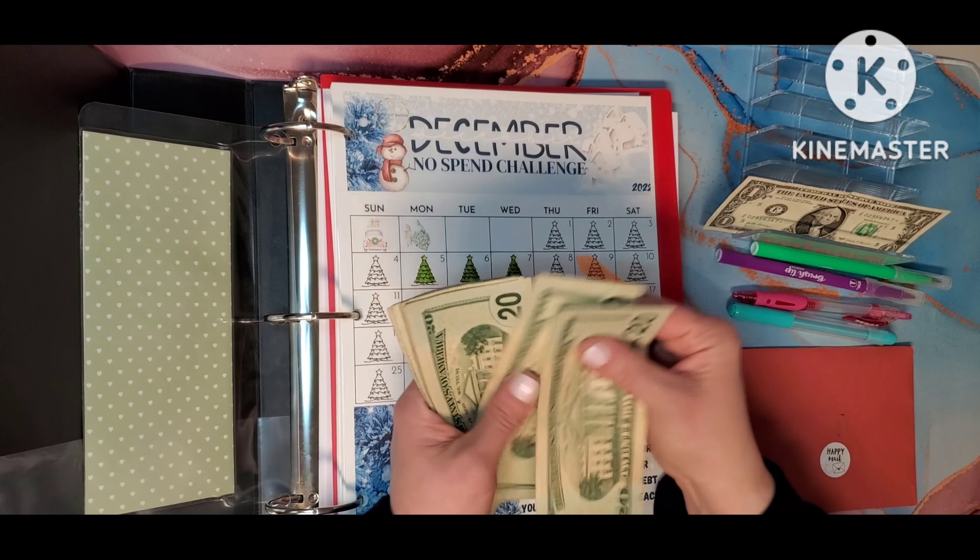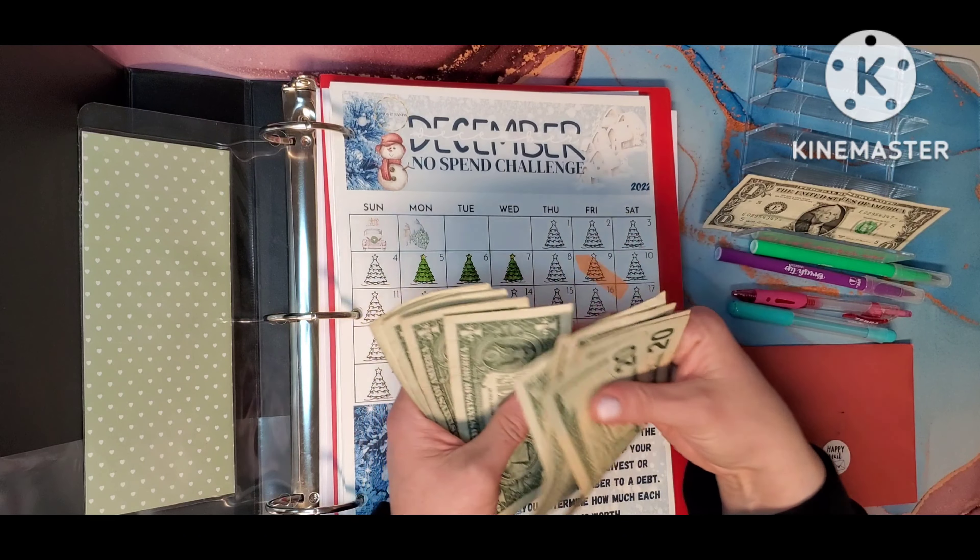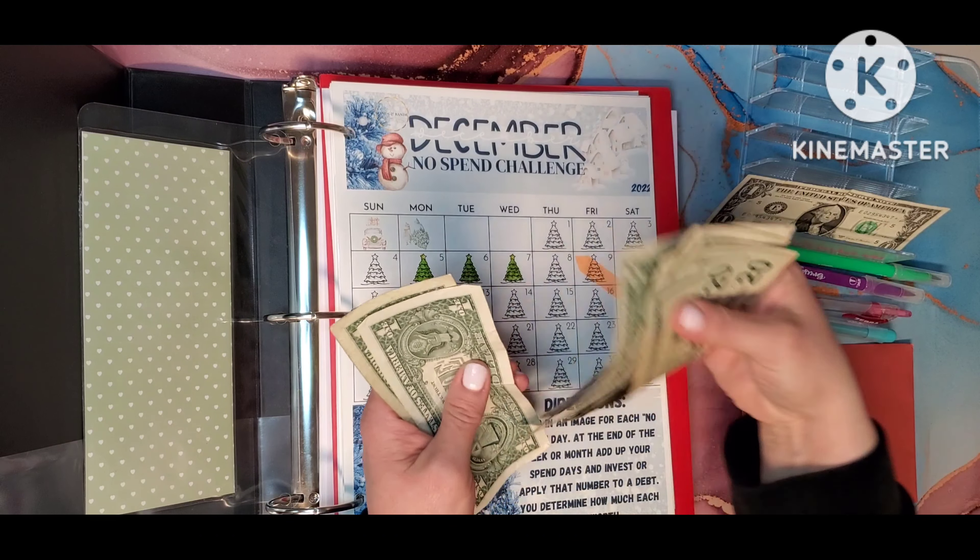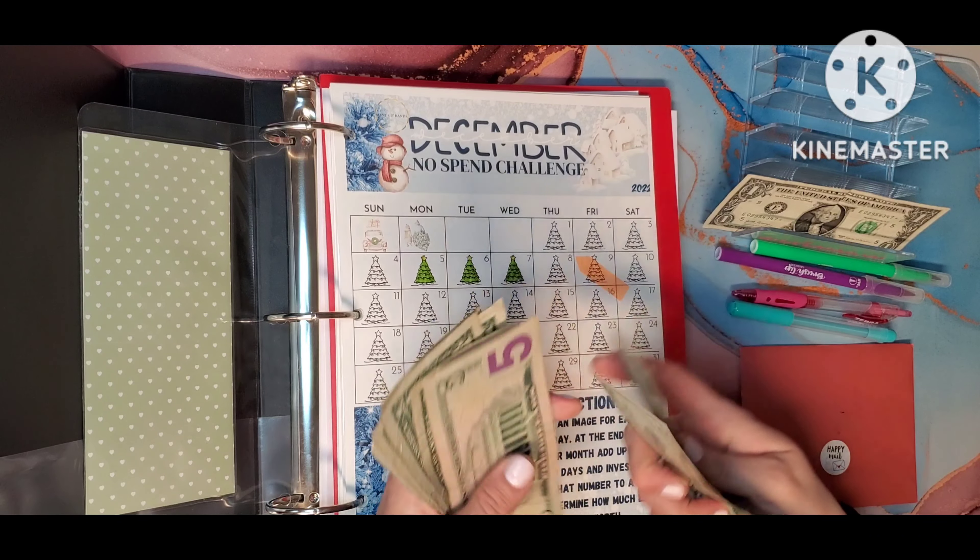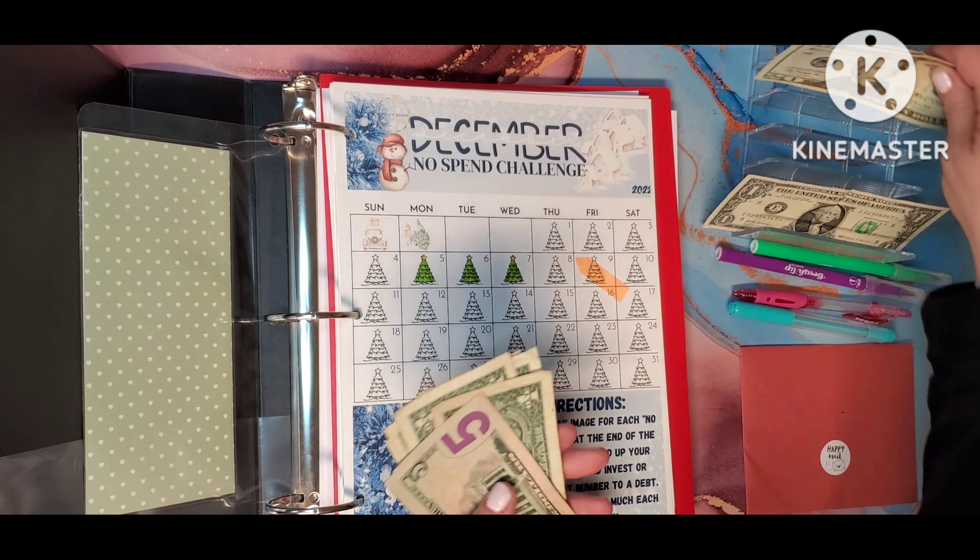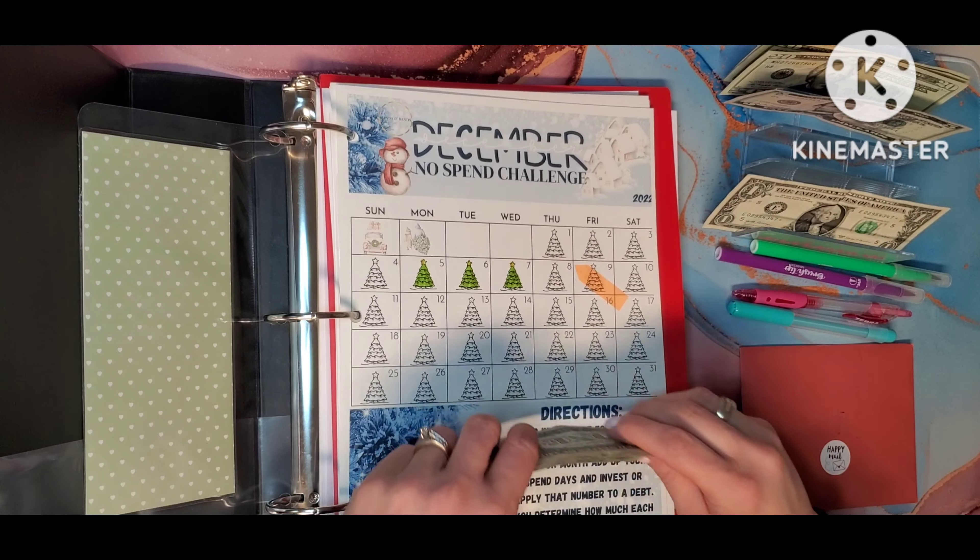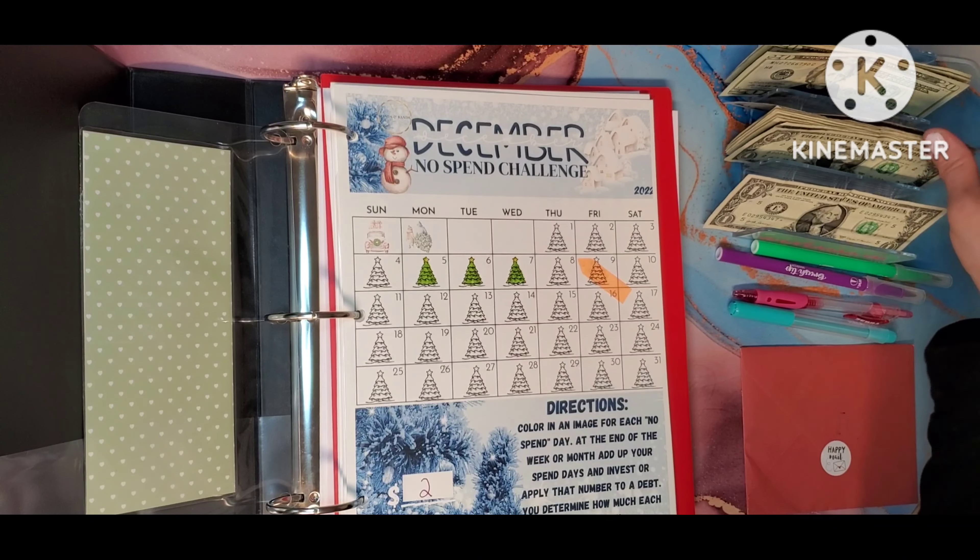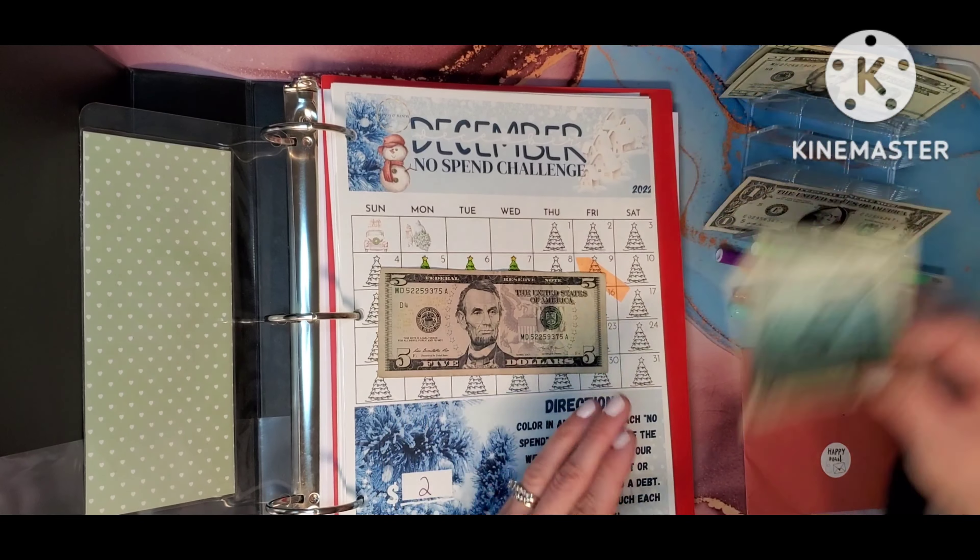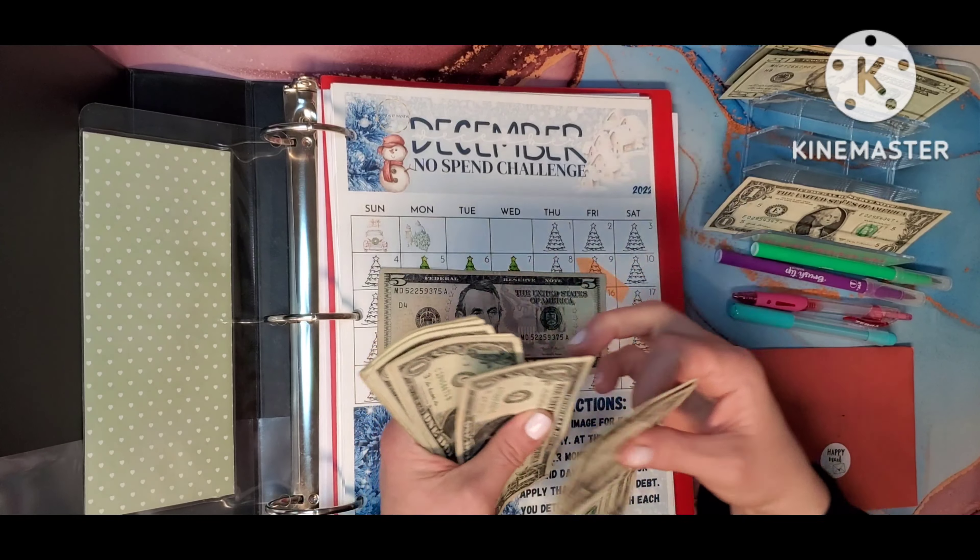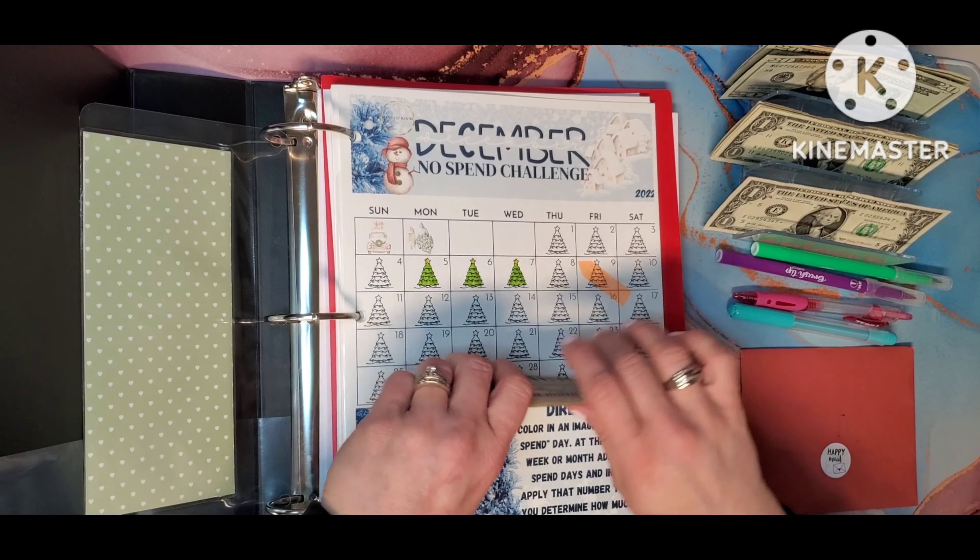I guess we need to see how much we have. We have twenty, forty, sixty-five, sixty-six, sixty-seven, sixty-eight, sixty-nine, seventy, seventy-one, seventy-two, seventy-three, seventy-four, and seventy-five. So we are going to do ten into this challenge since we are starting. So we have five, six, seven, eight, nine, and ten. And that is what we are starting with today.